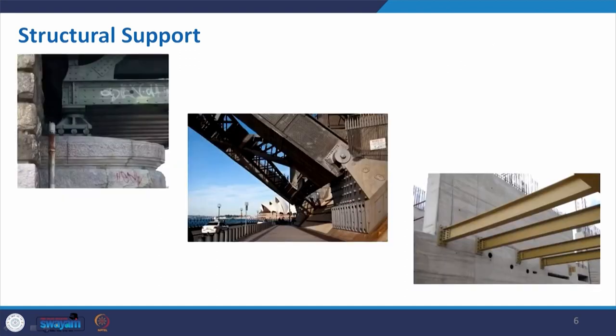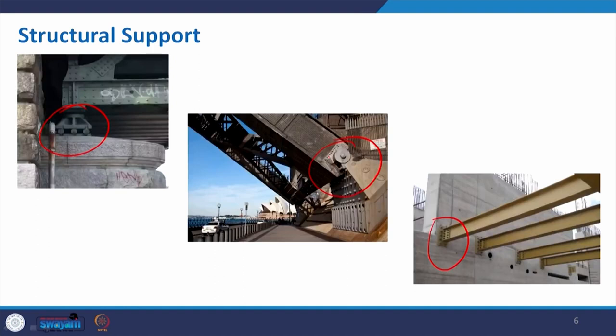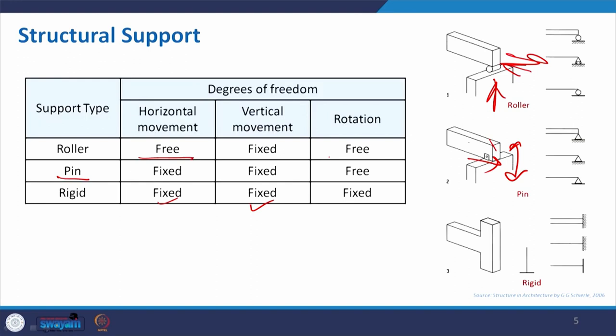To make it clearer, here is an example of a bridge: at one support you can see a roller type joint at one end, a pin joint at the other end, and where it is fixed to the wall it is a rigid joint — neither pin nor roller. Depending on that, we will have the arrangement. The main intention here is to understand the types of support we can develop and their flexibilities — whether we want no horizontal movement, no vertical movement, or no rotation, we go for a rigid type of support.